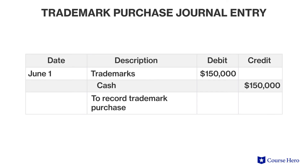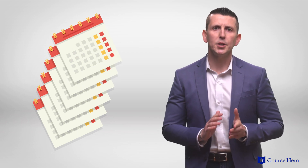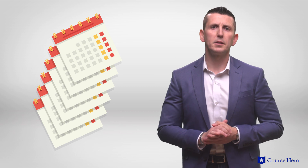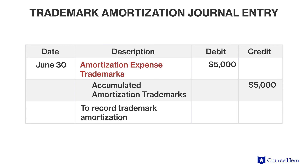Suppose that Tom Berger's purchases a trademark for $150,000. When the trademark is first purchased, it is recorded at its initial cost. Suppose further that this particular trademark has a useful life of 30 years. Each year, the company will record an amortization expense of $5,000, which is $150,000 divided by 30. The amortization amount is recorded as an amortization expense on the income statement as a debit, and the credit is to accumulated amortization.